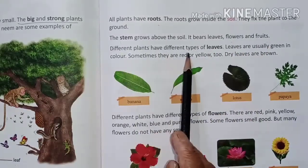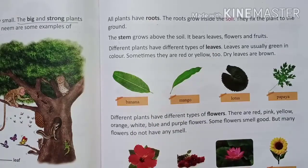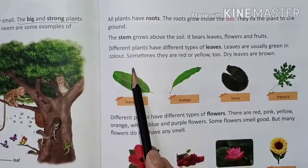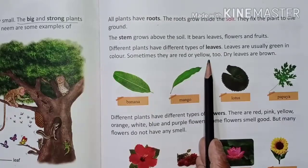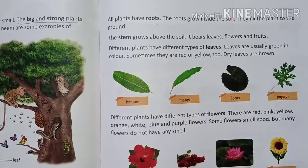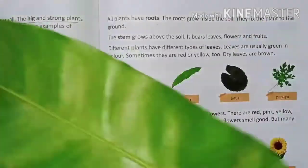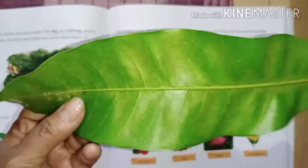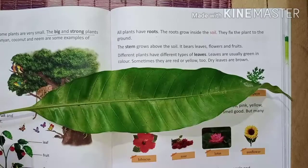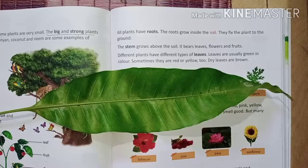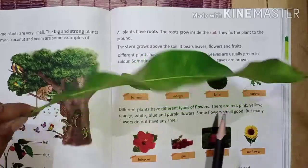Different plants have different types of leaves. Not all plants have the same type of leaves. Leaves are usually green in color, but sometimes they are red or yellow too, and dry leaves are brown. Now I am showing some plant leaves. You know which type of plant this is? We eat it — even when it is raw we eat it. Yes, mango. This is a mango leaf. The color is very green.